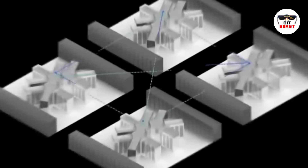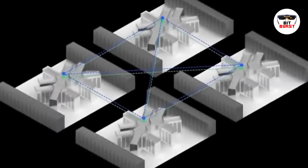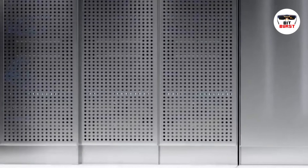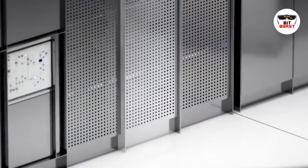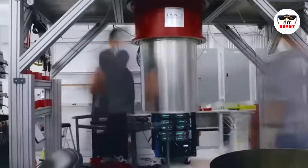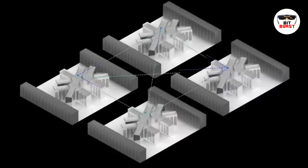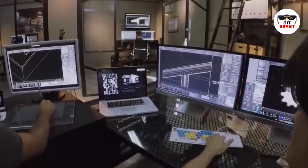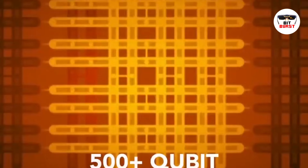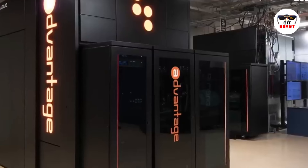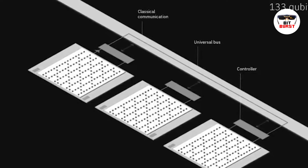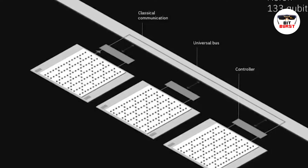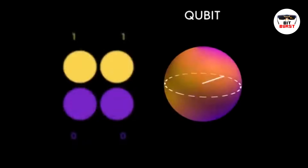In a quantum computer, qubits are manipulated using precise microwave pulses. These pulses can change the state of a qubit, put it into a state of superposition, or entangle it with other qubits. By carefully controlling these pulses, a quantum computer can perform a wide range of computations. One unique aspect of quantum mechanics is that measuring a quantum system changes the system. When a qubit in a superposition state is measured, it chooses either 0 or 1, and the superposition state collapses. This is why quantum computations are carefully arranged to perform as many operations as possible before the final measurement.